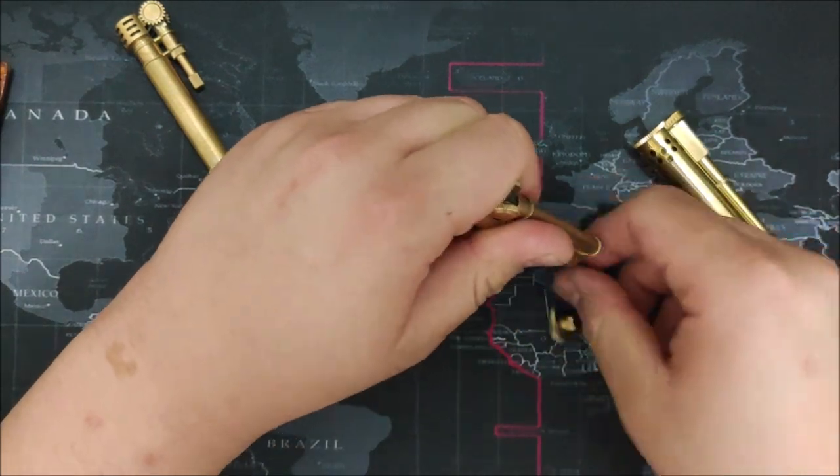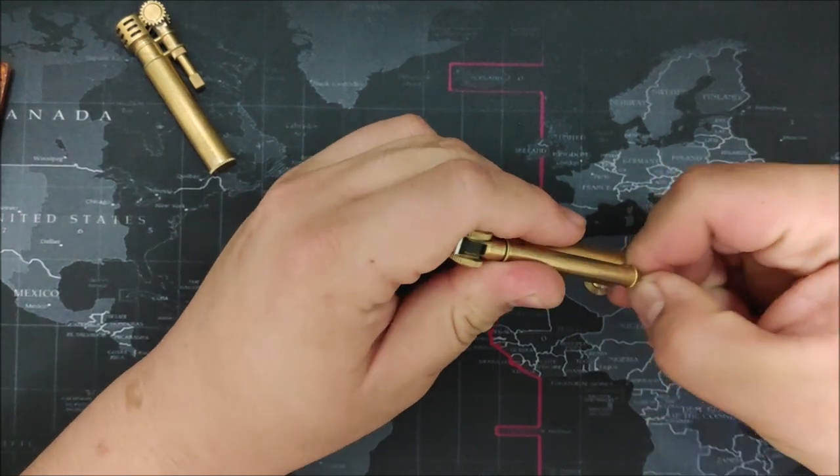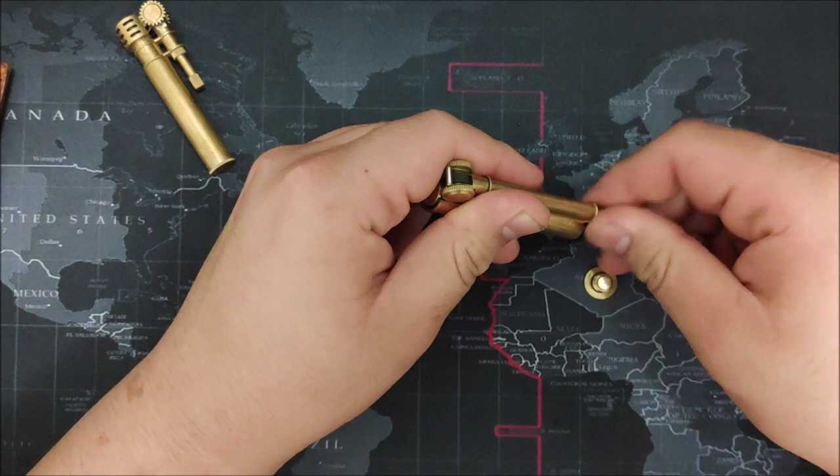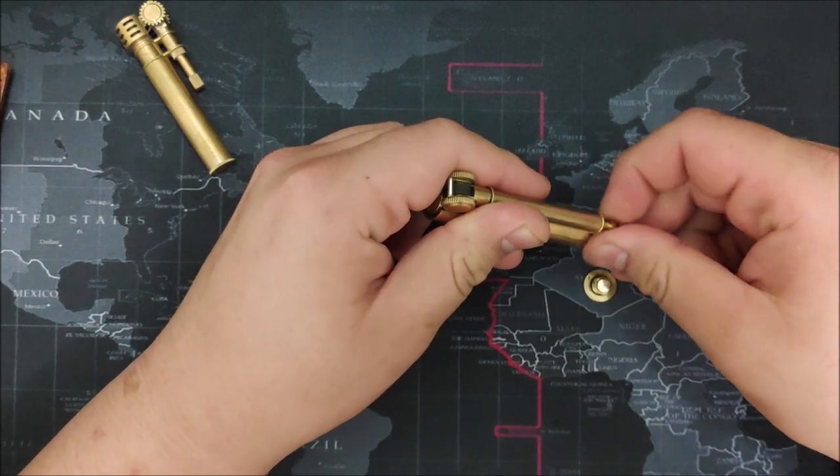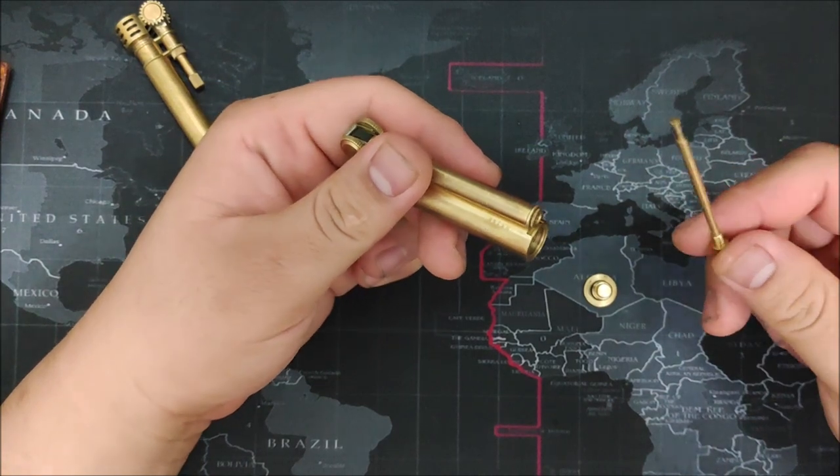So let's just open that back again. So that's the flint compartment in there, and we open this up. Again, this is where the flint goes for the Field L.